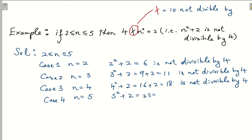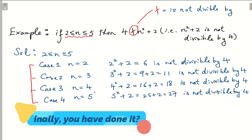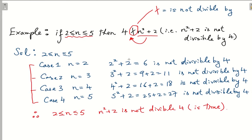27 is not divisible by 4. As you can see, for all cases in our domain where n is between 2 and 5, we have tested each one and none is divisible by 4. We have proved all cases are true, therefore the statement — that for n between 2 and 5, n² + 2 is not divisible by 4 — is true. This is proof by exhaustion: we check every single case in the domain and if all results are true, the statement must be true.